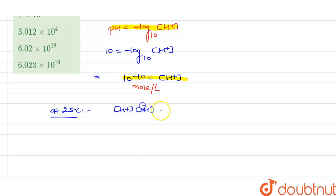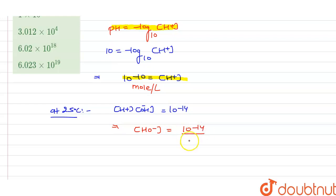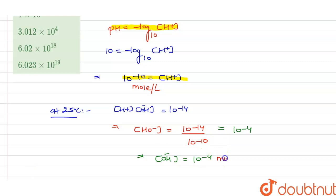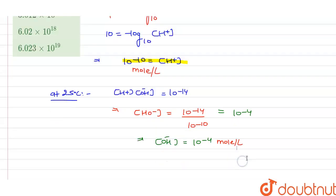We know that at 25 degrees centigrade, the product of the concentration of H⁺ ion and OH⁻ ion is equal to 10 to the power minus 14. So from here we can easily find the concentration of OH⁻ ion: it will be equal to 10 to the power minus 14 divided by 10 to the power minus 10. On solving, we get 10 to the power minus 4 moles per liter as the concentration of OH⁻.